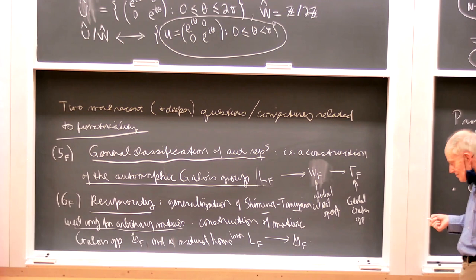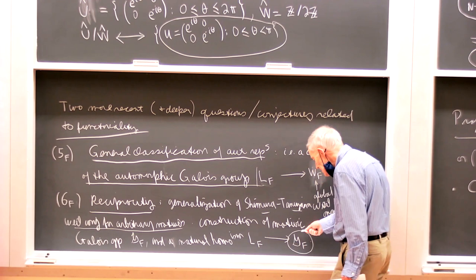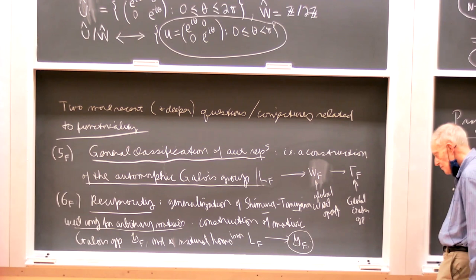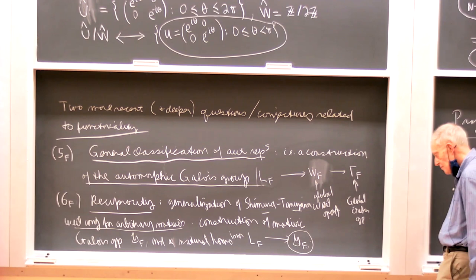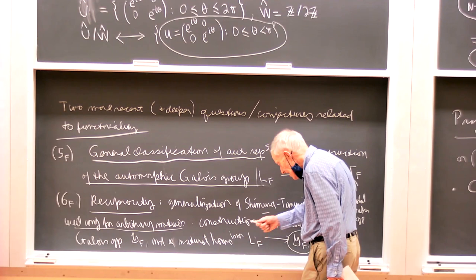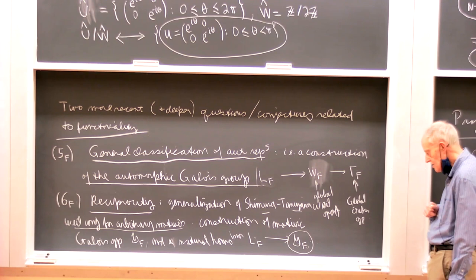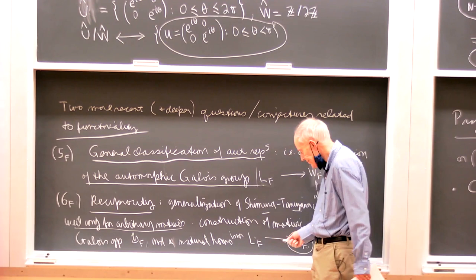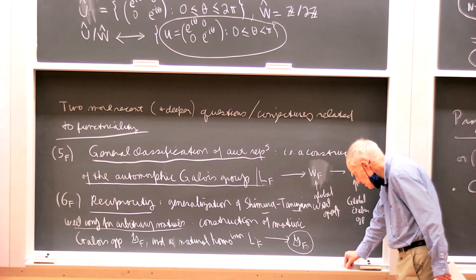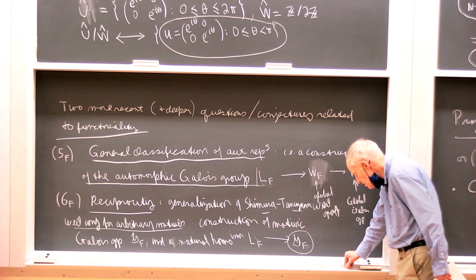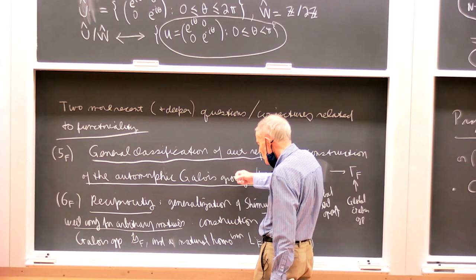A motive would be a finite-dimensional algebraic representation of this complex group, and so for any such thing it would hand you an n-dimensional representation of this locally compact group, and that's what is supposed to give you automorphic representations of GL_N. So a motive would give rise to an automorphic representation of GL_N. One can propose a construction of this group — the proposed construction of the automorphic Galois group leads to a proposed construction of the motivic Galois group as well.